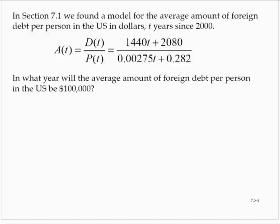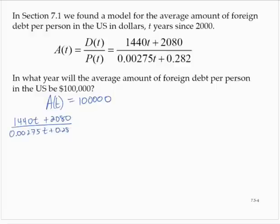So we want to know when is A of t equal to 100,000. Well, A of t is 1,440t plus 2,080 over 0.00275t plus 0.282, and we need that to be equal to 100,000.